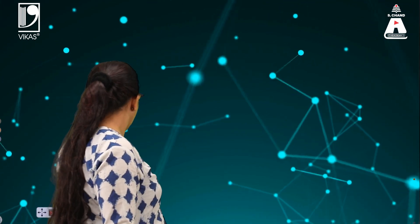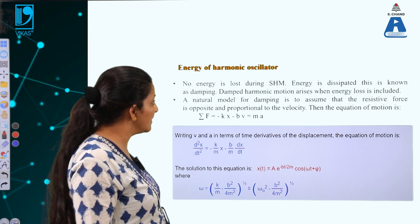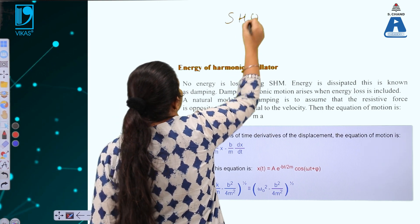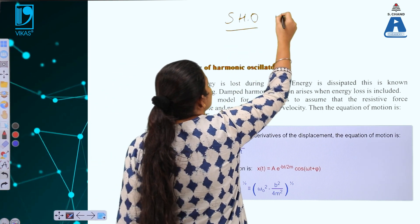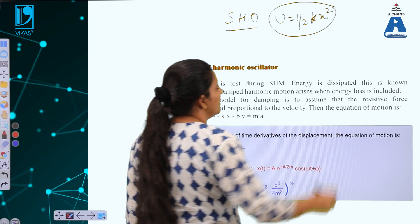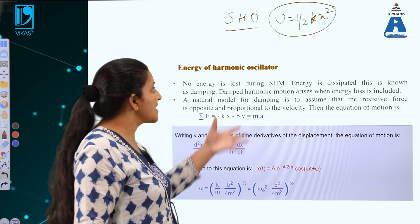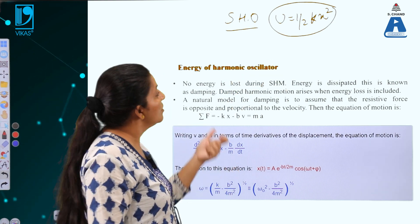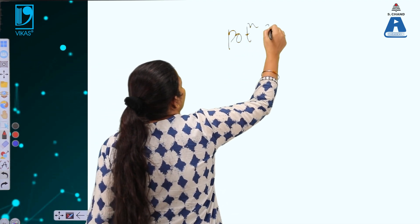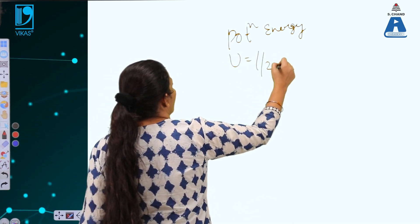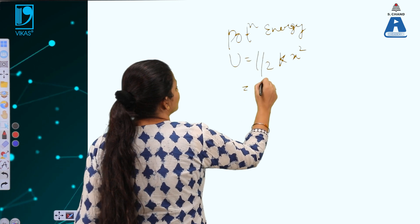Welcome to S-Chand Academy. I am Dr. Narendra Kaur. We will now study the energy of the damped harmonic oscillator. In a simple harmonic oscillator, the potential energy is the restoring energy — the energy applied to the body so that it can regain its original position. The potential energy is given by half kx², which equals the restoring energy.